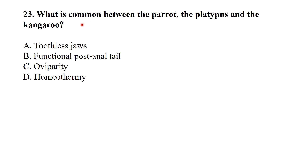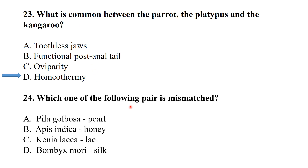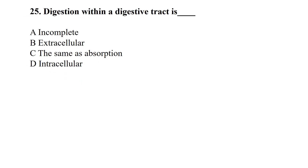What is common between the platypus and the kangaroo? — These are homeothermic. Which one of the following pair is mismatched? — Pearl-gold boss of the pile is mismatched because pearls are derived from oysters.